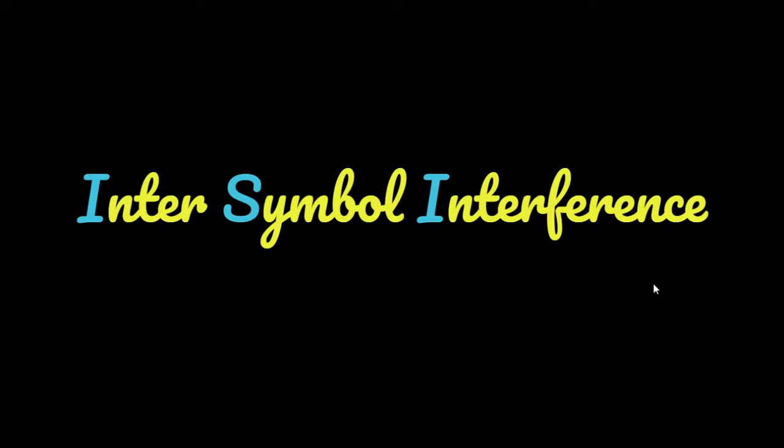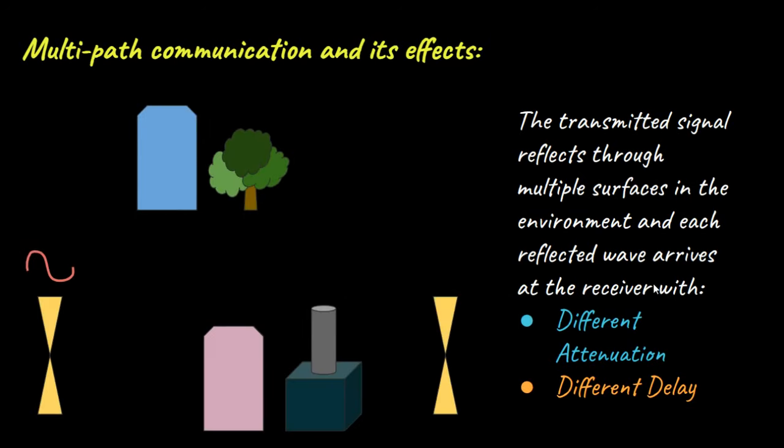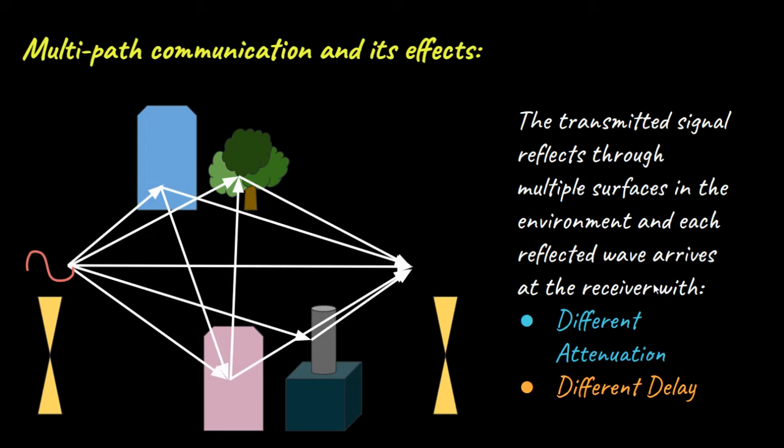We will first begin by understanding what is meant by multi-path communication. When a signal is transmitted in the wireless environment, it undergoes reflection due to the presence of multiple objects in the surroundings like buildings, trees, cars, etc. When these reflected waves arrive at the receiving antenna, they all have travelled individual unique paths and as a result have different attenuations as well as different delays. Some of these reflected signals may even arrive with opposite phases and cancel each other out. Such a system where multi-path signals exist between the transmitter and the receiver is known as a multi-path communication system.